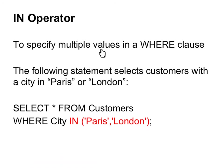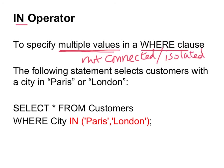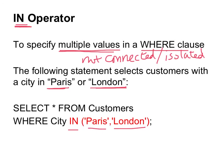Sometimes we need to specify multiple values in the WHERE clause, but these values are not connected or are isolated. For example, the following statement selects all customers with a city in Paris or London. Since these two values are isolated, we cannot use the BETWEEN operator. But with the IN operator we write: WHERE City IN ('Paris', 'London'). We need apostrophes around each value and enclose them in parentheses. The IN operator is very useful for specifying several values that are not connected.